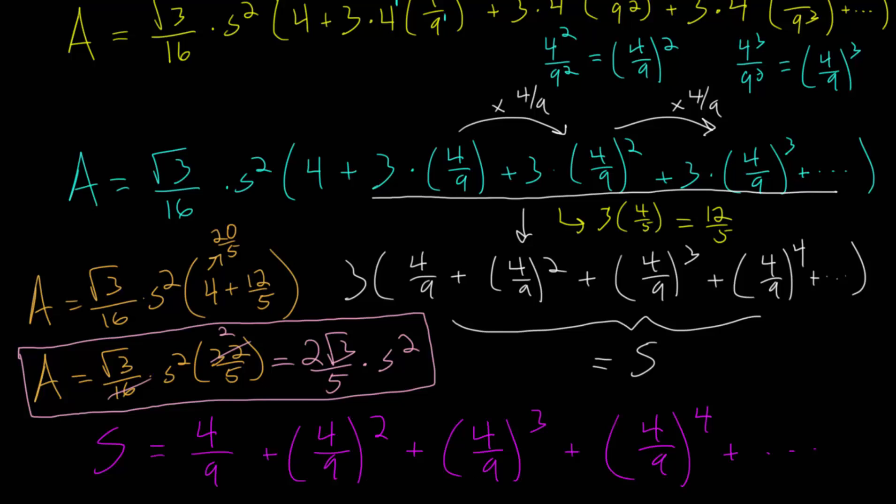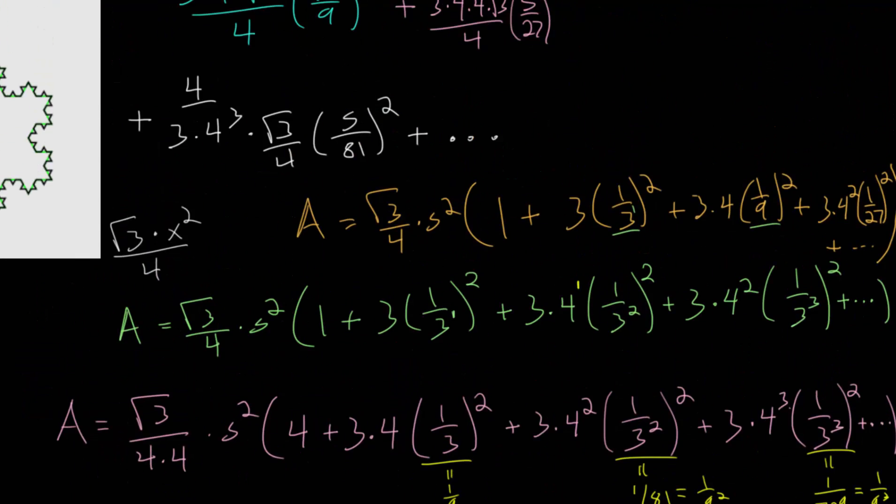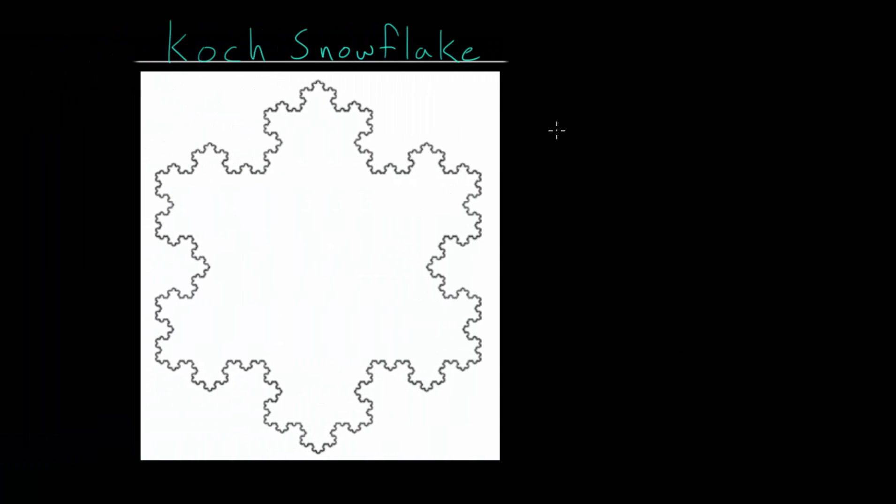If we go back up to the original drawing of the Koch snowflake, again, what we found is that the area of this is twice the square root of 3 over 5 multiplied by s squared. And if, let's say,